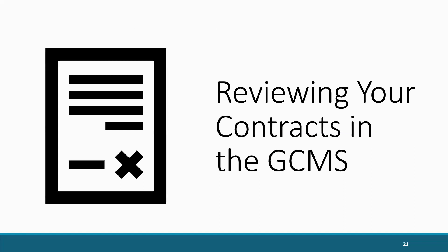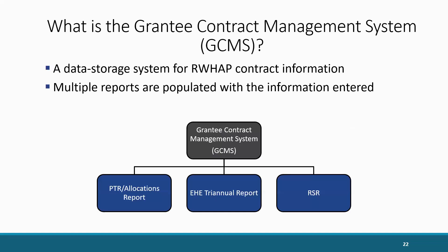The Grantee Contract Management System, or GCMS, is a data storage system for recipients' Ryan White contract information. Information about a recipient's contracts are entered into the GCMS and maintained in this one place to decrease the data entry burden. From this contract information, multiple data reports — such as the PTR or Allocations report, the EHE Triannual report, and the RSR — are populated with the information entered in the GCMS. Within the GCMS, you'll be able to add new contracts, as well as modify, copy, or delete existing ones.